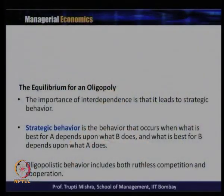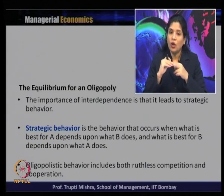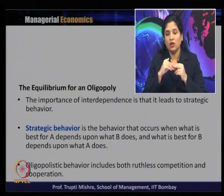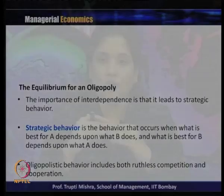Oligopoly's behavior includes both ruthless competition and cooperation. When it comes to collusive oligopoly, it is about cooperation; in non-collusive oligopoly, it is generally competition. Since it is both cooperation and competition, the behavior is strategic — the firm's well-being depends on what other firms do. In a duopoly with firms A and B, what is best for one firm depends on whether the other is increasing or decreasing price, increasing or decreasing output, what advertising campaigns they use, and what after-sale service they provide.